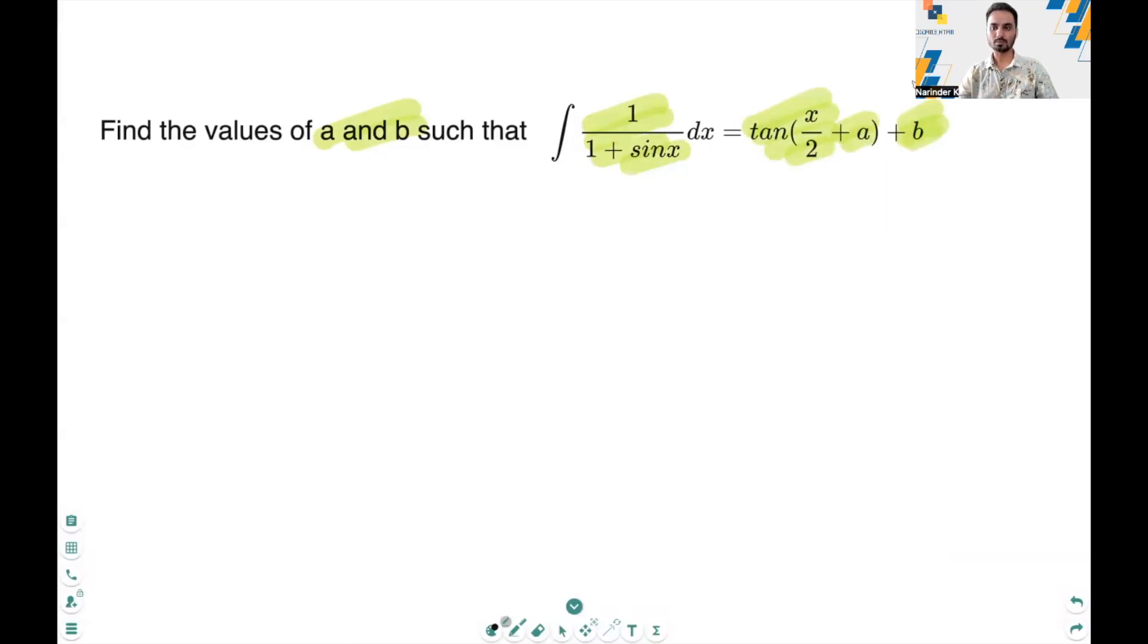There are a couple of ways to solve this question. One of them is rationalizing the left-hand side by multiplying with 1 minus sine x in the numerator and the denominator. But if we proceed with that, we will get a number of trigonometric terms on the left-hand side. However, on the right-hand side, we got only one trigonometric term which is tan x over 2 plus a plus b. So it will be hard to find the value of a and b by comparing left-hand side with the right-hand side. Therefore, we will not use the rationalization method here.